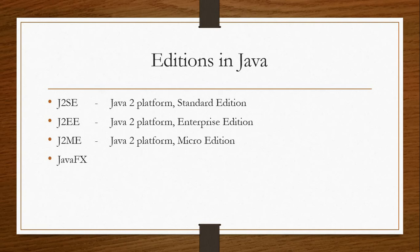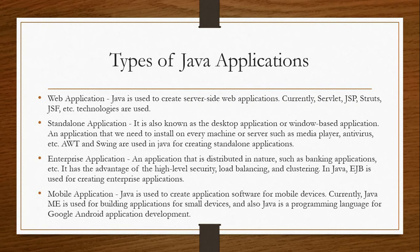Here we have Java editions: J2SE — Java 2 Platform Standard Edition, used to develop desktop applications; J2EE — Java 2 Platform Enterprise Edition, used to develop web applications; J2ME — Java 2 Platform Micro Edition, used to develop micro applications; and JavaFX, used to develop desktop and internet-based applications. It is released from Java 5 onwards.